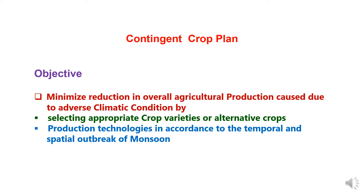As per changing weather patterns, we must be well prepared for sustaining agricultural productivity, and this necessitates the concept of contingency crop planning. The objective of contingent crop planning can be defined as to minimize reduction in overall agricultural production due to adverse climatic conditions, by selecting appropriate crop varieties or alternative crops and production technologies according to the temporal and spatial outbreak of monsoon.